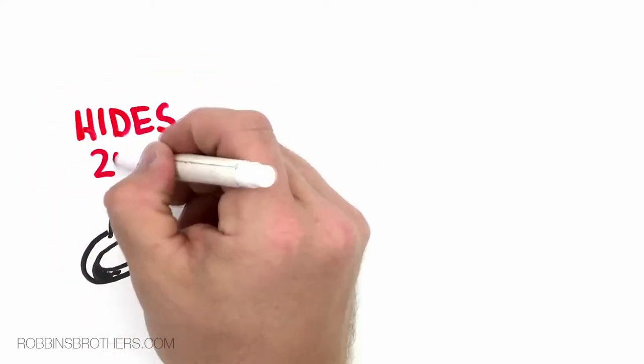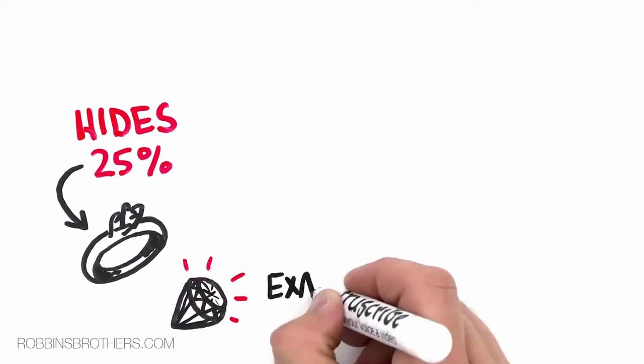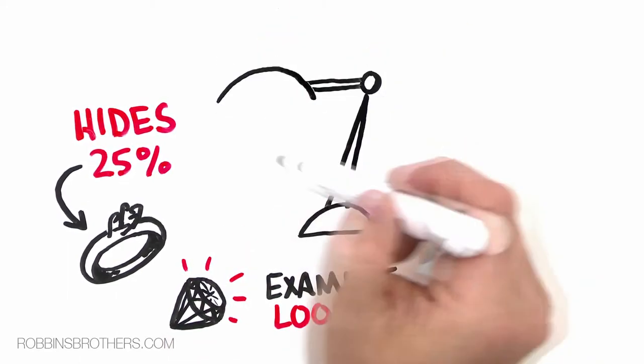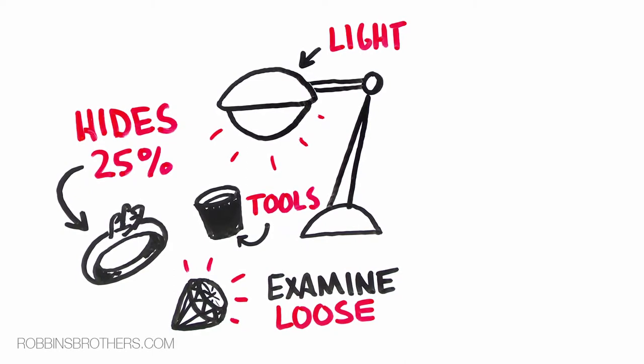A mounted diamond hides up to 25% of the diamond from your eye, so you should examine the diamond loose using the proper lighting conditions with the right microscopic tools to be able to see what's in a diamond.